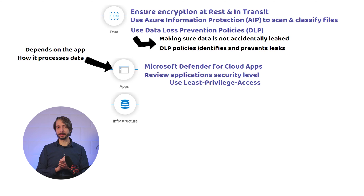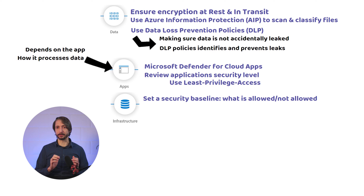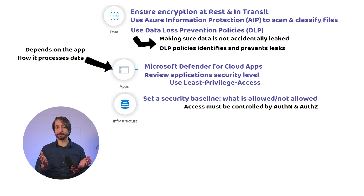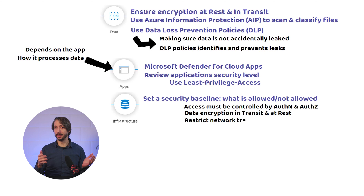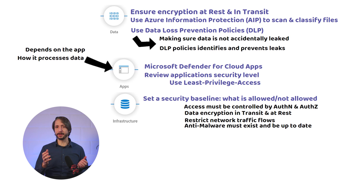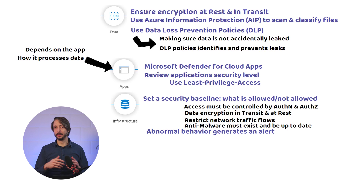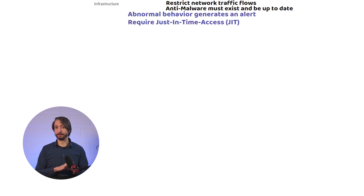For the infrastructure, we can start by setting a security baseline defining what is allowed or not allowed. Some examples: any access must be controlled by authentication or authorization; data must be encrypted both in transit and at rest; you should restrict traffic flows; anti-malware must exist and be up to date; any workload exhibiting abnormal behavior will generate an alert; and workloads should require just-in-time access.